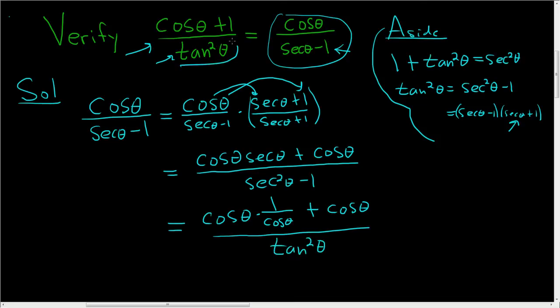So we have that part. That part's good. And looks like we have the other part as well. This cancels, so you get 1 plus cosine theta over tangent squared of theta.